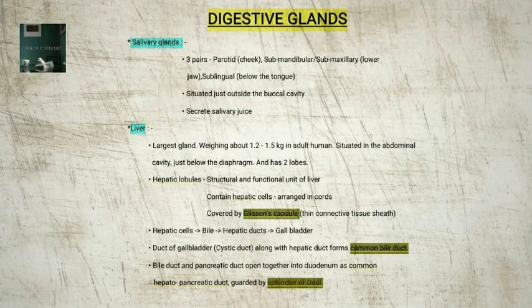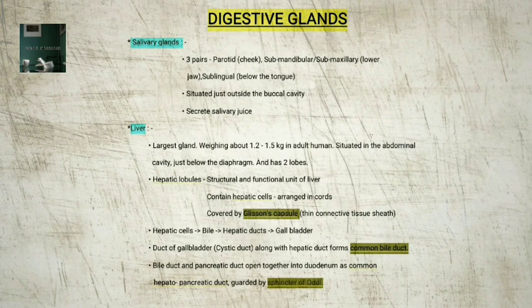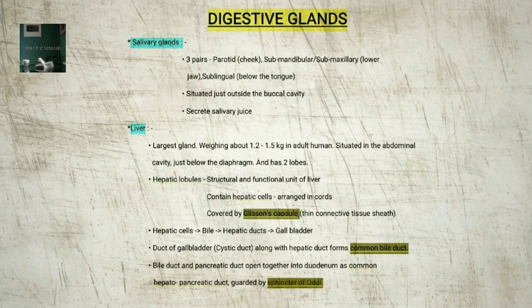2. Liver — the liver is the largest gland of the body, weighing about 1.2 to 1.5 kg. It is situated in the abdominal cavity just below the diaphragm and has two lobes. The hepatic lobules are the structural and functional units of the liver, containing hepatic cells arranged in the form of cords. Each lobule is covered by the Glisson's capsule, a thin connective tissue sheath. The bile secreted by the hepatic cells passes through the hepatic ducts and is stored and concentrated in the gallbladder. The duct of the gallbladder along with the hepatic duct from the liver forms the common bile duct. The bile duct and the pancreatic duct open together into the duodenum as the common hepatopancreatic duct, which is guarded by the sphincter of Oddi.